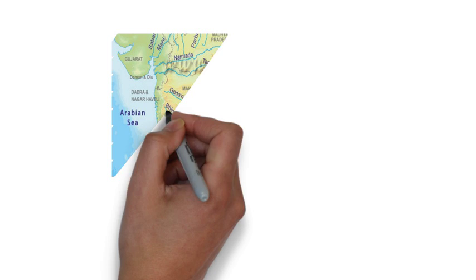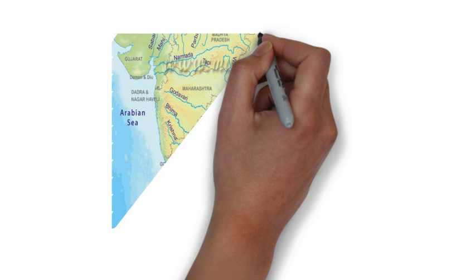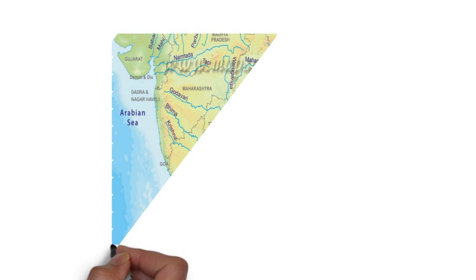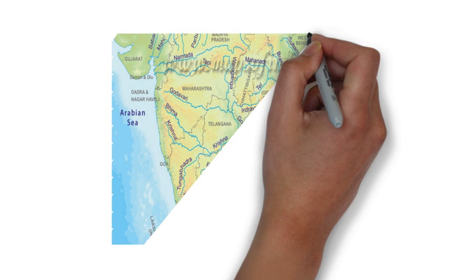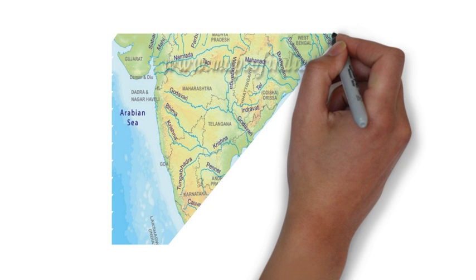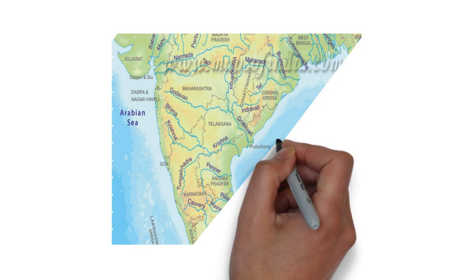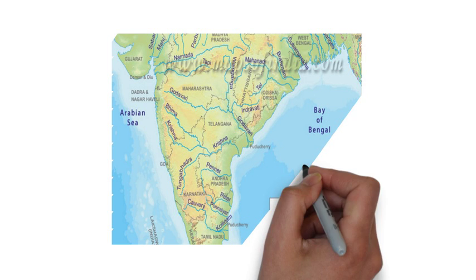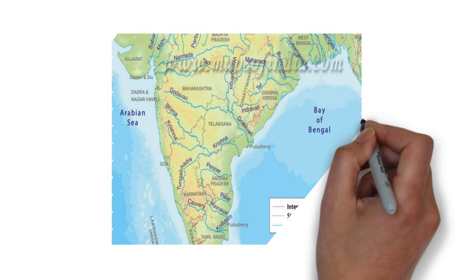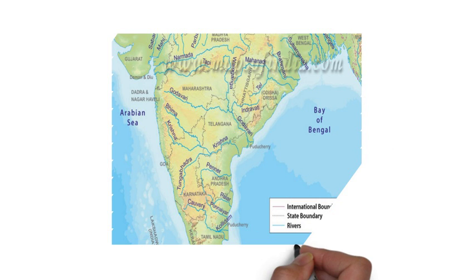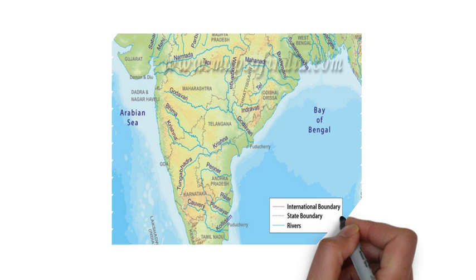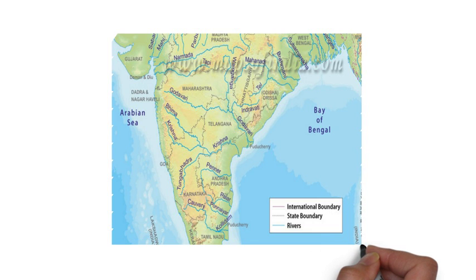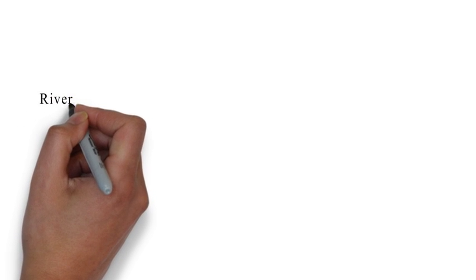These are two important facts to keep in mind. I would suggest you have a close look at the map and understand all the rivers originating from the Western Ghats and draining into the Bay of Bengal, and the two rivers — Narmada and Tapi — which drain into the Arabian Sea. A useful trick to remember geography facts is to always keep a map in front of you whenever you are reading about physical features.